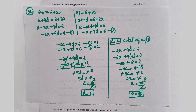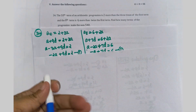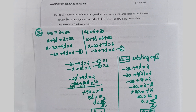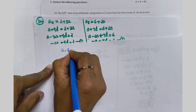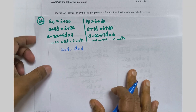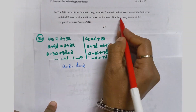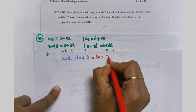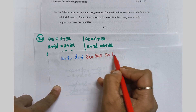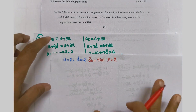You have got a = 8 and d = 2. But the answer is not finished. Now it is given that Sn = 540, and N is the question mark. How many terms of the progression make a sum of 540? Sn = 540 is given, N is the question mark.